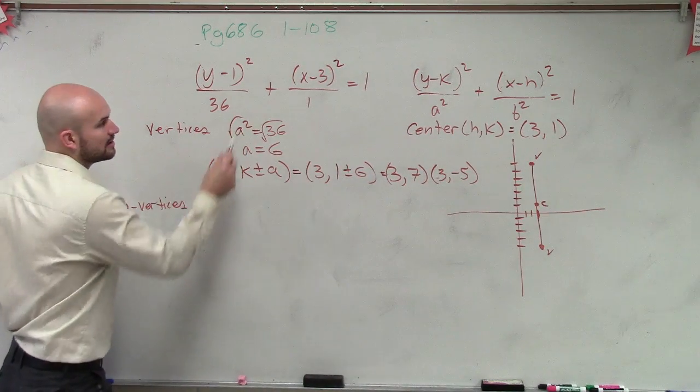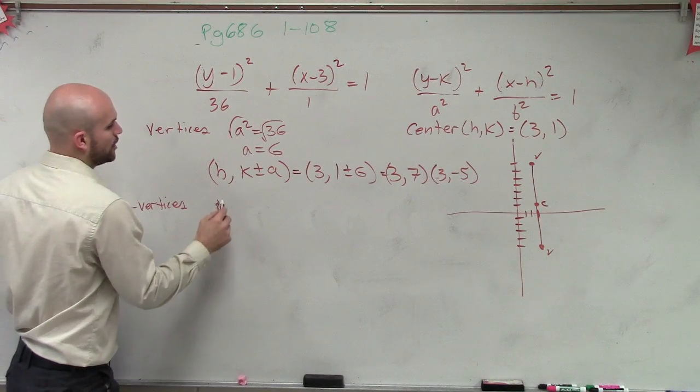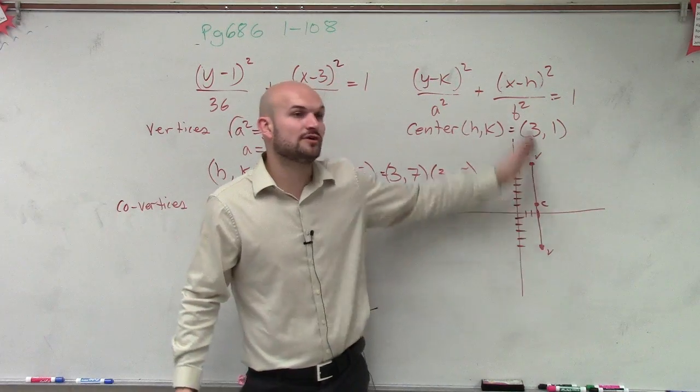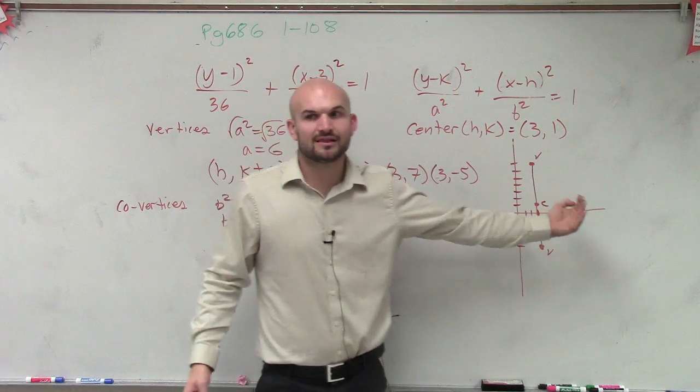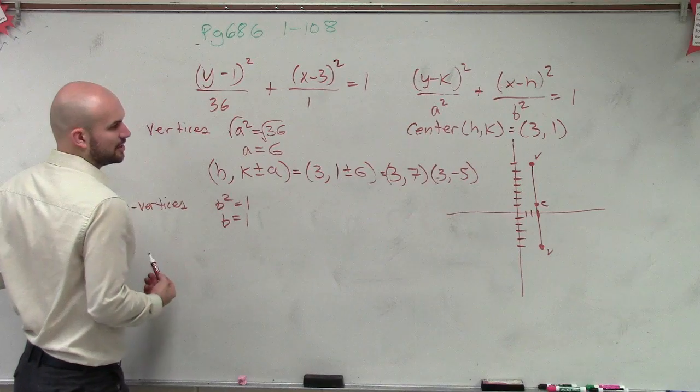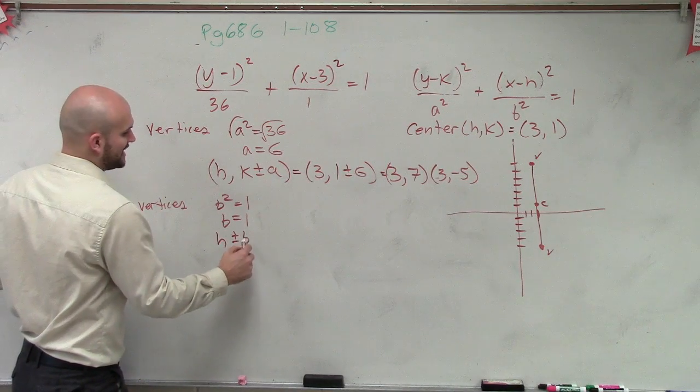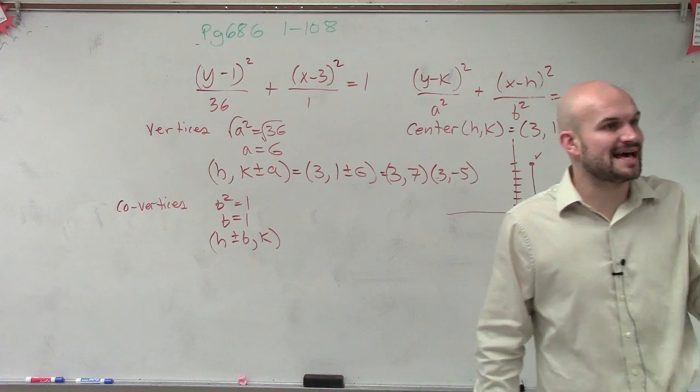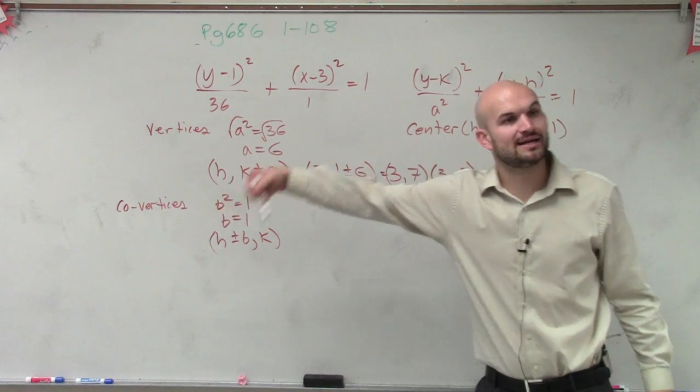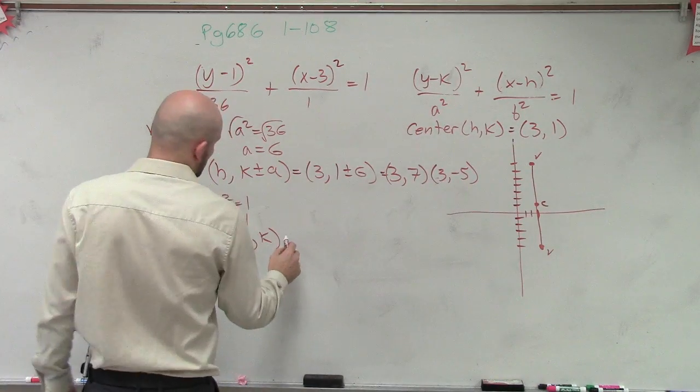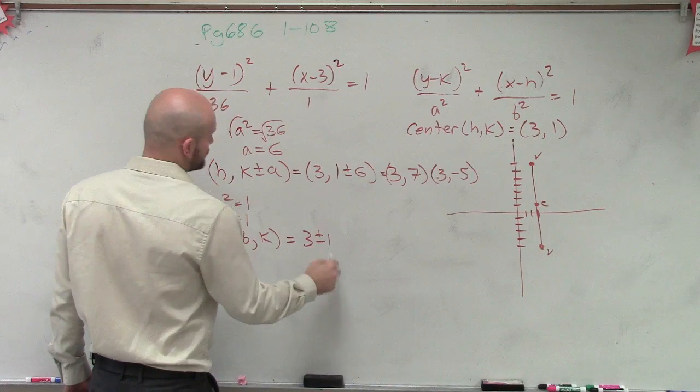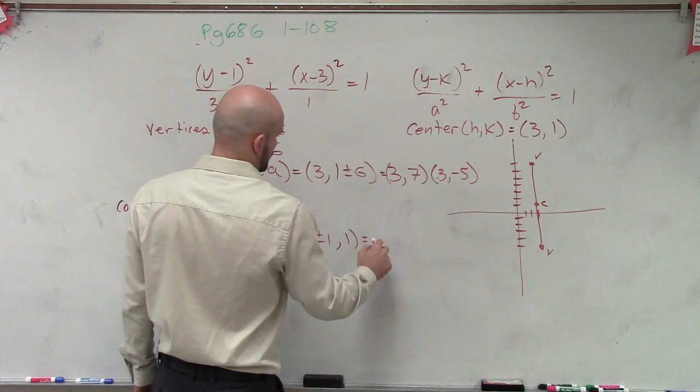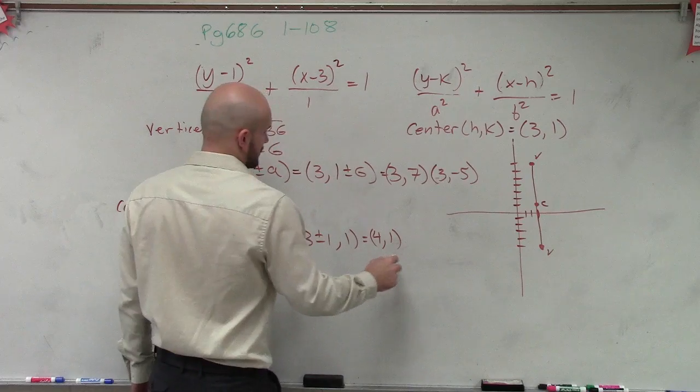So the co-vertices are your distance of b. So we know b squared equals one. So therefore, b equals one. Now notice the co-vertices though are now going to be, if your vertices are up and down, your co-vertices have to be left or right. So my co-vertices is going to be a little bit different equation. Now it's going to be h plus or minus b, comma k. Because now the h coordinate on my center is where I'm going to be moving. So I'm going to be moving one, shifting one to the right and shifting one to the left. But if you just want to look at algebraically, it looks like this. Three plus or minus one comma one. So that's going to give me coordinates of four comma one and two comma one.